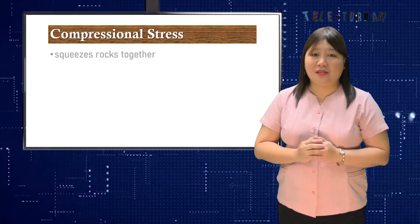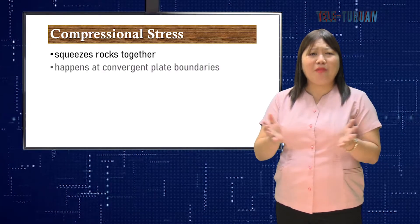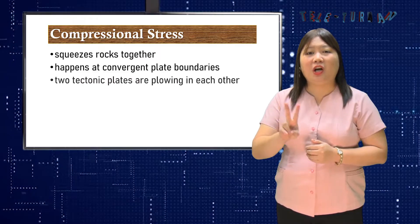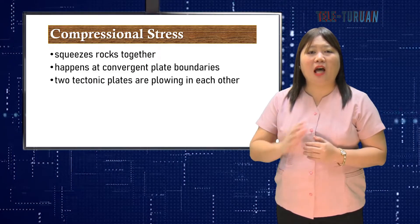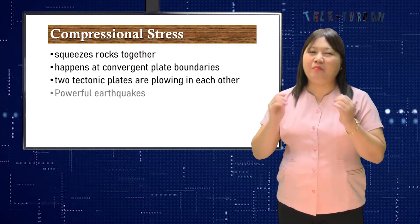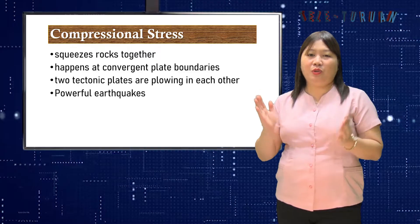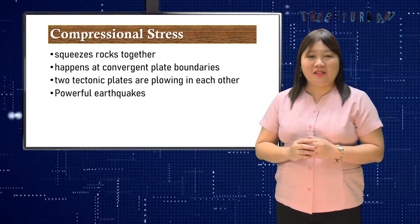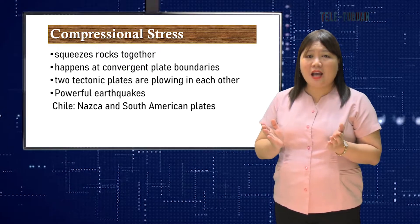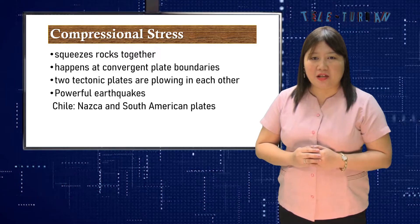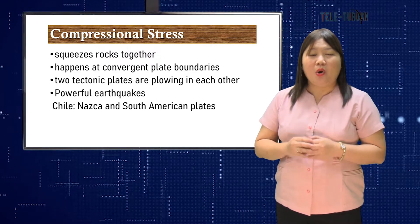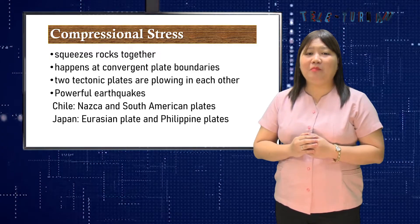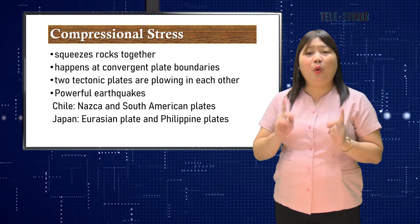Compressional stress squeezes rocks together. It happens at convergent plate boundaries, in which two tectonic plates are moving toward each other. Powerful earthquakes tend to strike areas where compressional stress is at work — such as in Chile, where the Nazca and South American plates are smashing into each other, or near Japan, where the Eurasian plate and Philippine plate are grinding against one another.